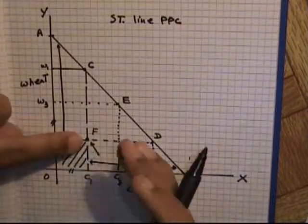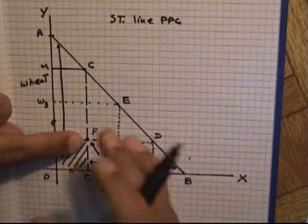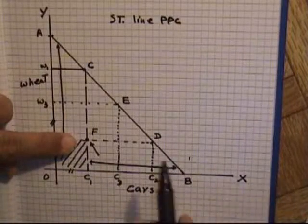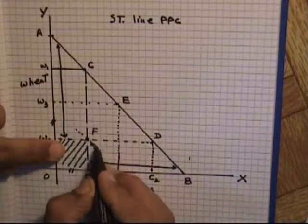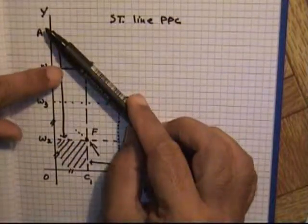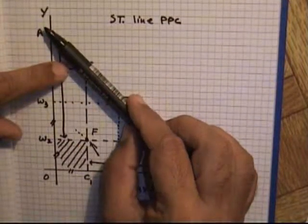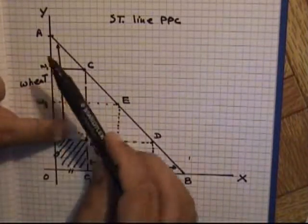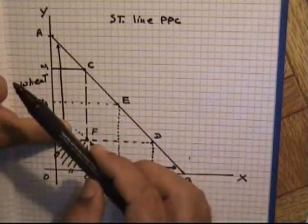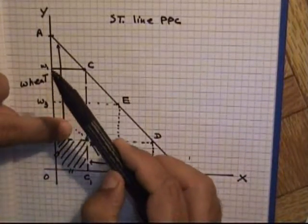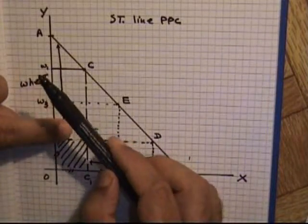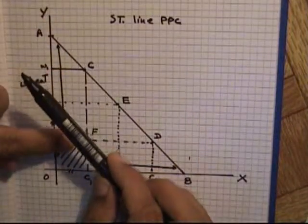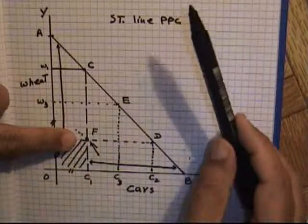In this situation, the country should try to find markets for its products — wheat and cars — outside the country, so that it can bring the lower demand level up to the desired maximum production capacity. This situation can be noticed in China, where the government tries to generate demand outside the country because local demand is not sufficient to engage all available resources, even though the Chinese economy is capable of producing more.